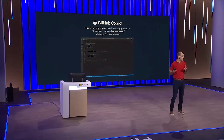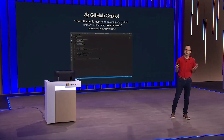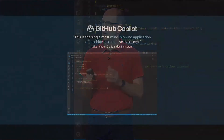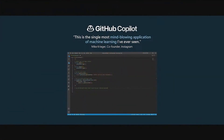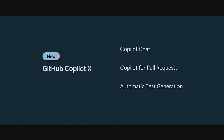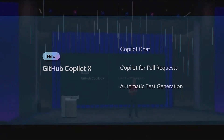GitHub Copilot was the first solution that we built using the new transformational large AI models developed by OpenAI. Copilot provides an AI pair programmer that works with all popular programming languages and dramatically accelerates your productivity. This spring, we announced a new update for GitHub Copilot that we call Copilot X, which further enhances Copilot using the latest GPT-4 models and provides immersive Copilot chat functionality, Copilot for pull requests, and automatic unit test generation scenarios.